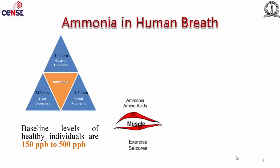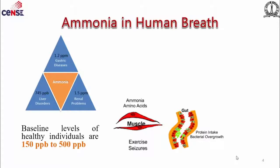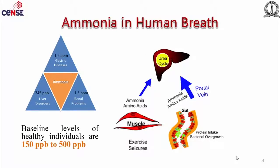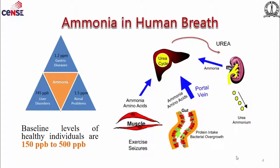When you go for exercise, your muscles generate ammonium ions which get converted to ammonia. From your gut, for example, there is bacterial overgrowth — like Helicobacter pylori infection — which is commonly known for ammonia release. When ammonium ions are released into your bloodstream, it goes to your liver because ammonia is toxic. It gets converted to urea through the urea cycle and gets filtered out through the kidneys. If your kidneys or liver are not functioning properly, this metabolism may malfunction and you may have elevated levels of ammonia in your breath.